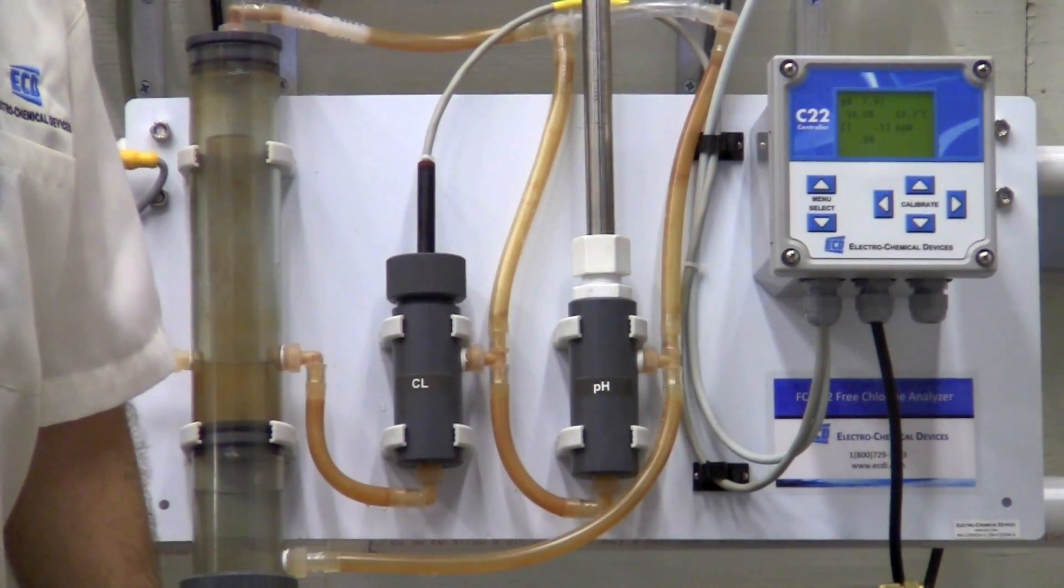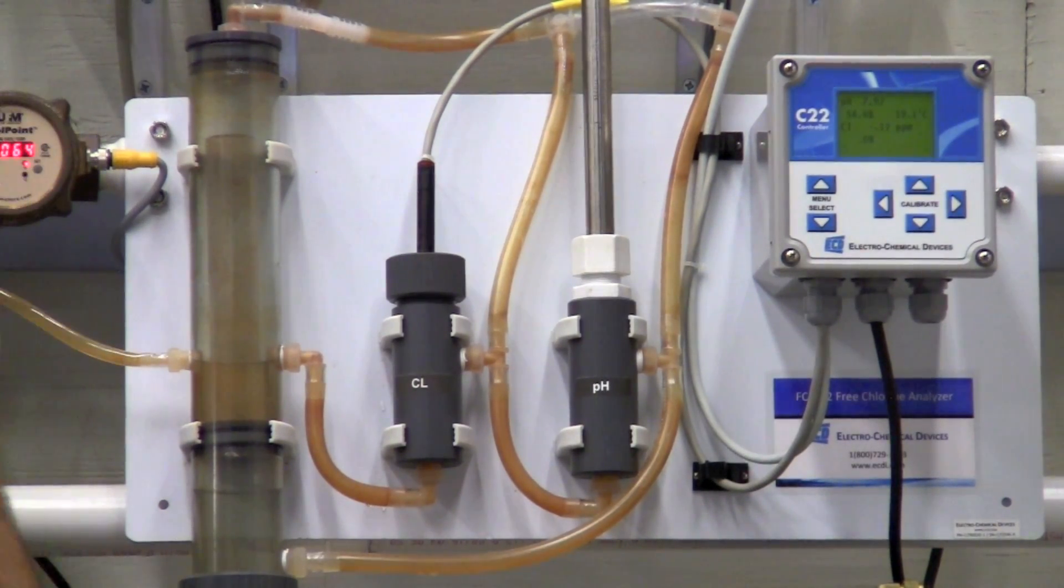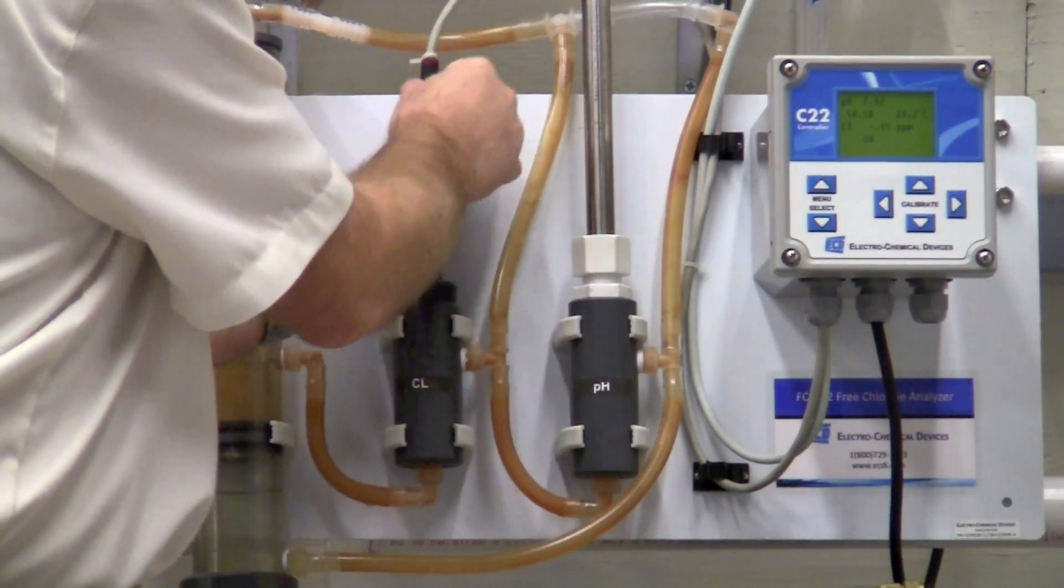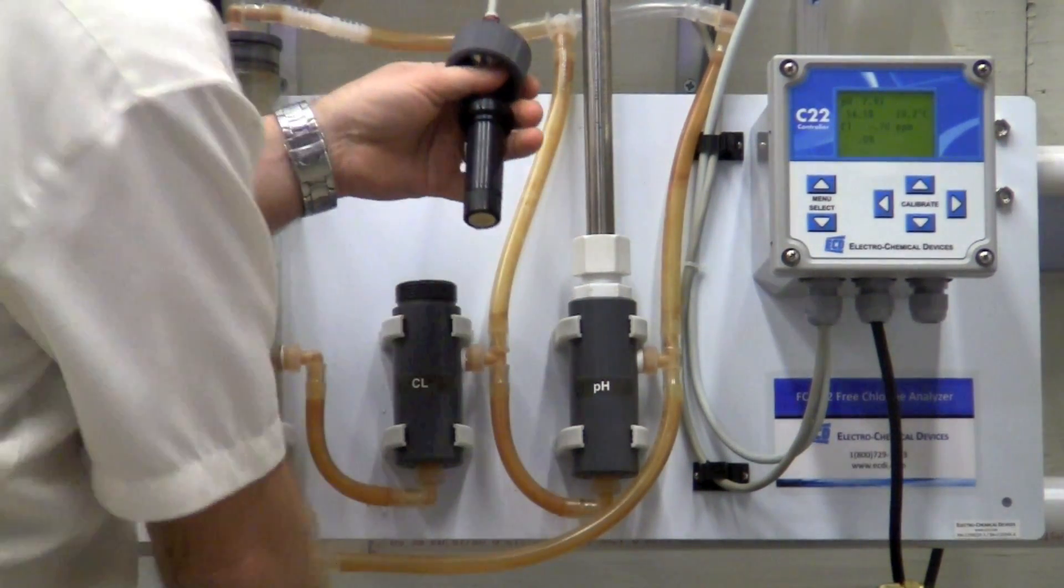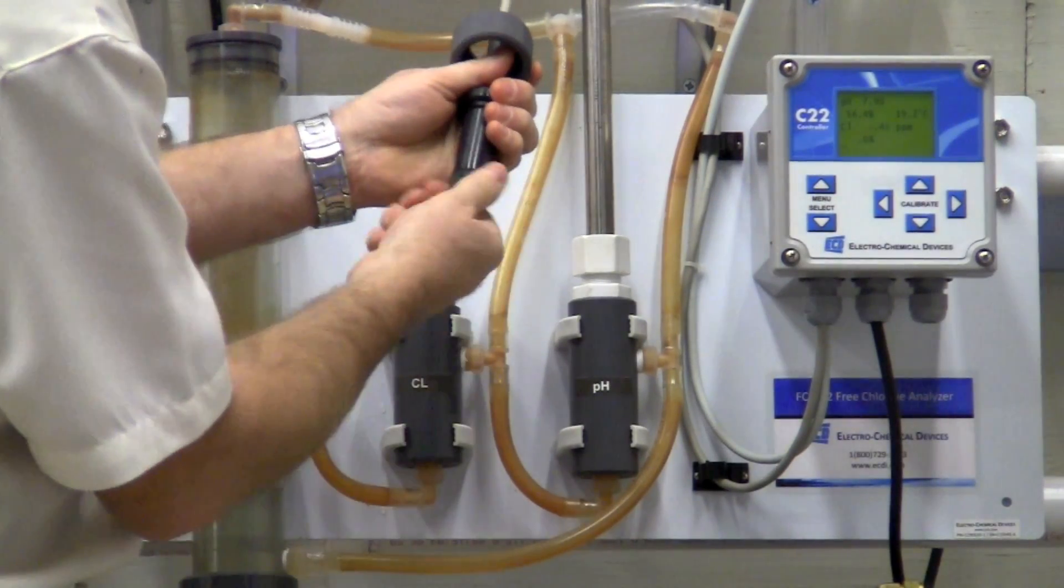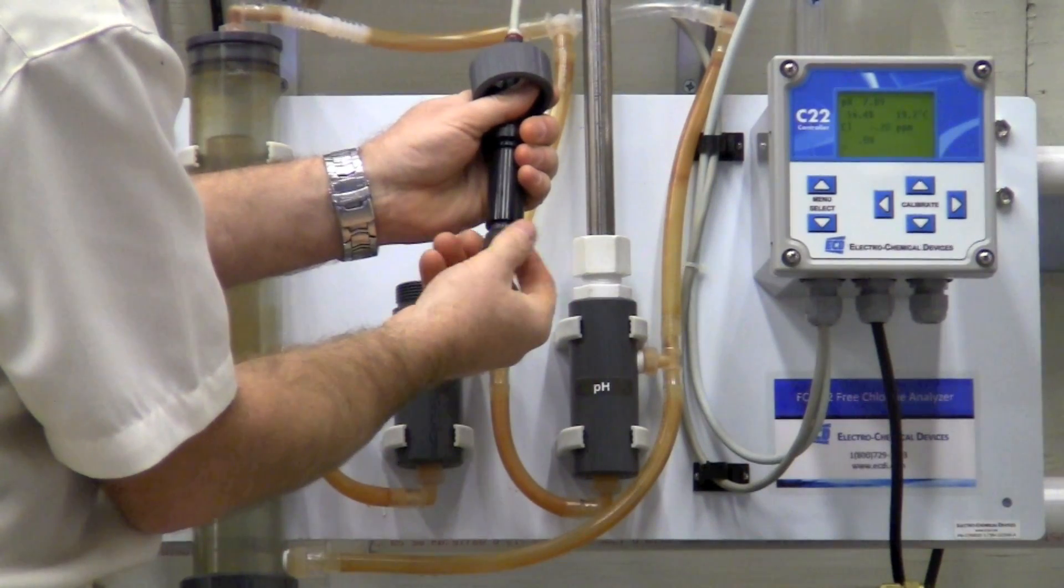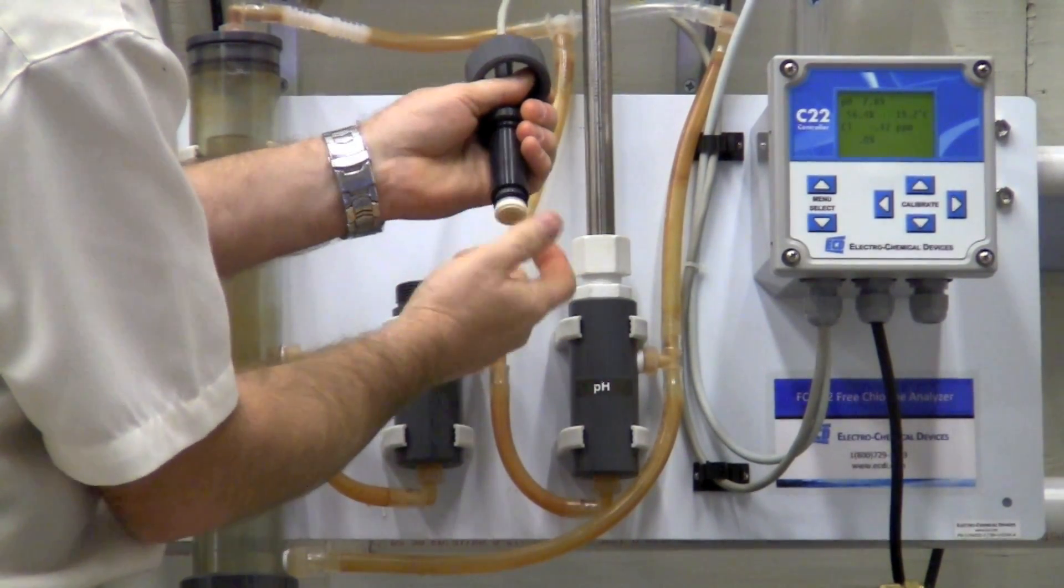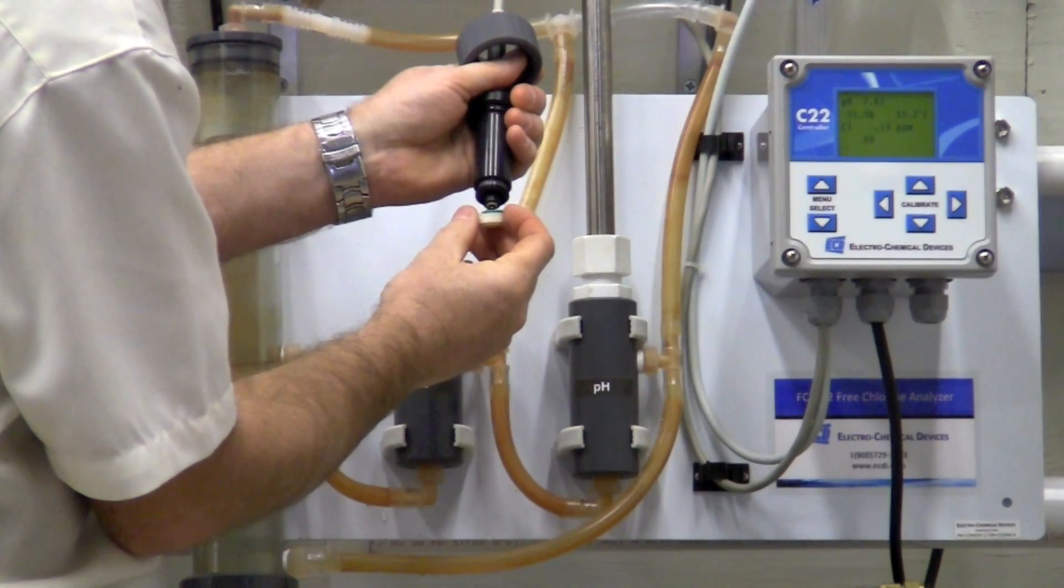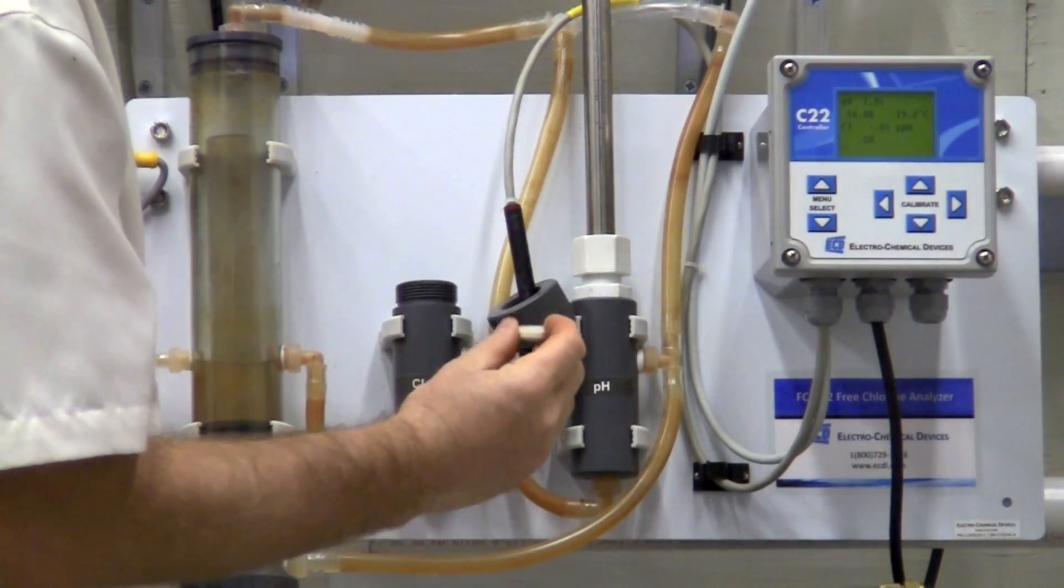Maintenance of the chlorine sensor is periodic refilling of the electrolyte and/or replacement of the chlorine membrane. Removing the chlorine from the flow cell, you've got a cap on the front that is unscrewed and then the cartridge itself is removed.